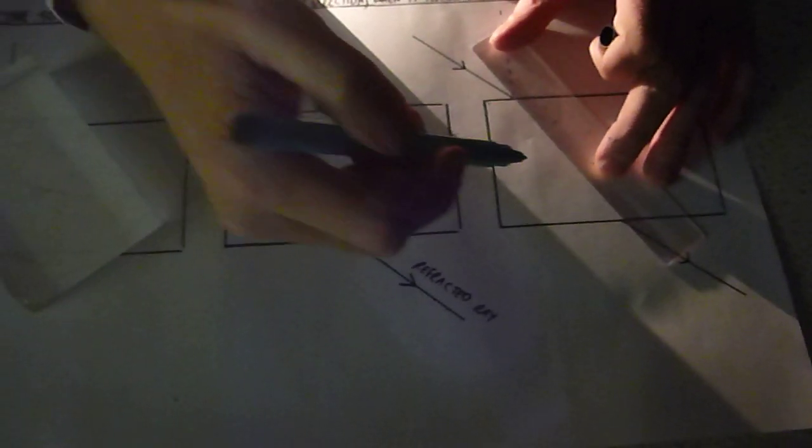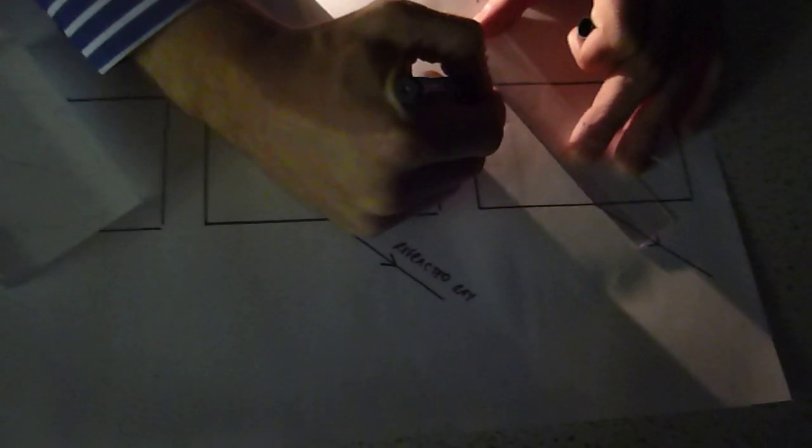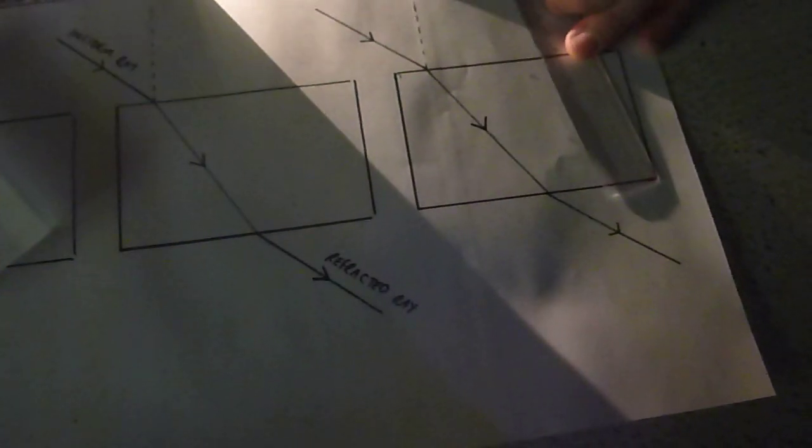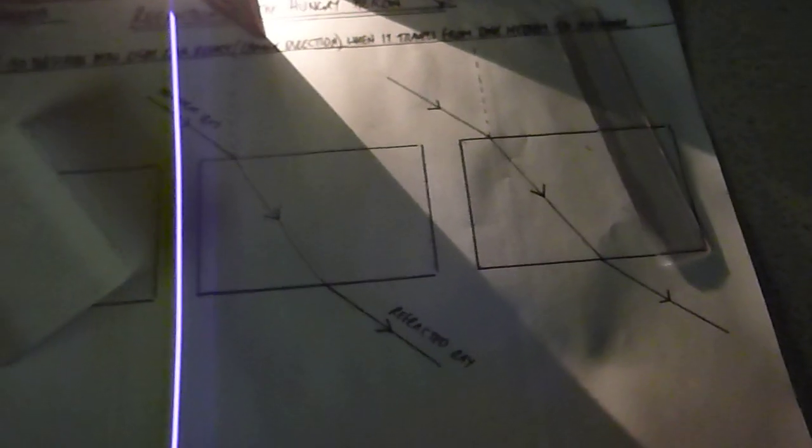Positioning the ruler again. Joining the refracted ray and the normal. Now positioning an arrow in the middle to show what direction it's going in.